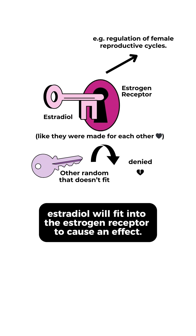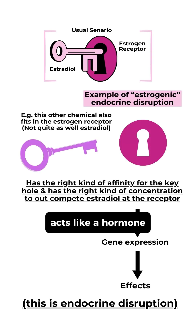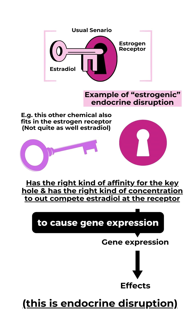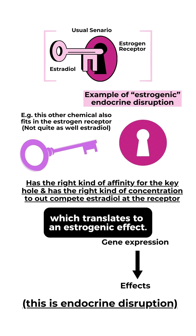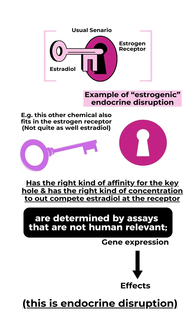For example, estradiol will fit into the estrogen receptor to cause an effect. Endocrine disruption is where a chemical either acts like a hormone or interferes with it. A chemical may fit into the estrogen receptor to cause gene expression, which translates to an estrogenic effect. Most regulatory definitions of endocrine disruption are determined by assays that are not human-relevant.